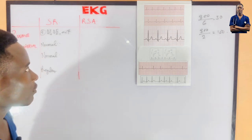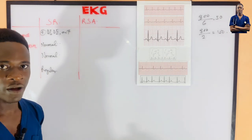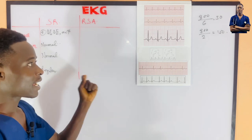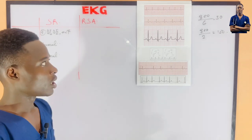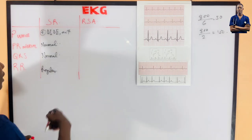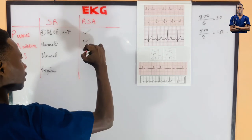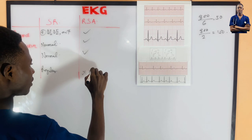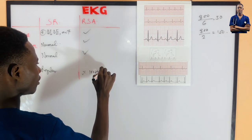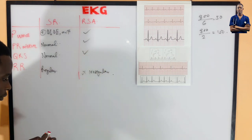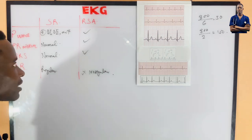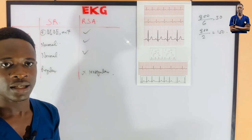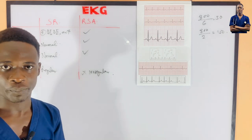Now let's come to respiratory sinus arrhythmia. It is a variation from sinus rhythm — it obeys all the rules of sinus rhythm except one: the RR interval is irregular, making it an irregular rhythm. So we say it is a variation from sinus rhythm.